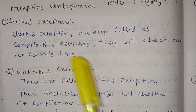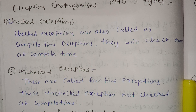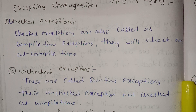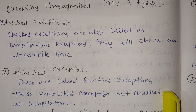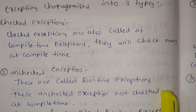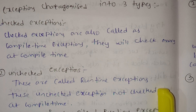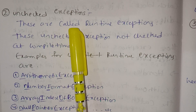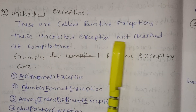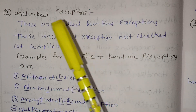Runtime exceptions and checked exceptions — checked exceptions are also called compile-time exceptions. They check for errors at compile time. Unchecked exceptions are not checked at compile time; they are called runtime exceptions and are only known when the program is run.